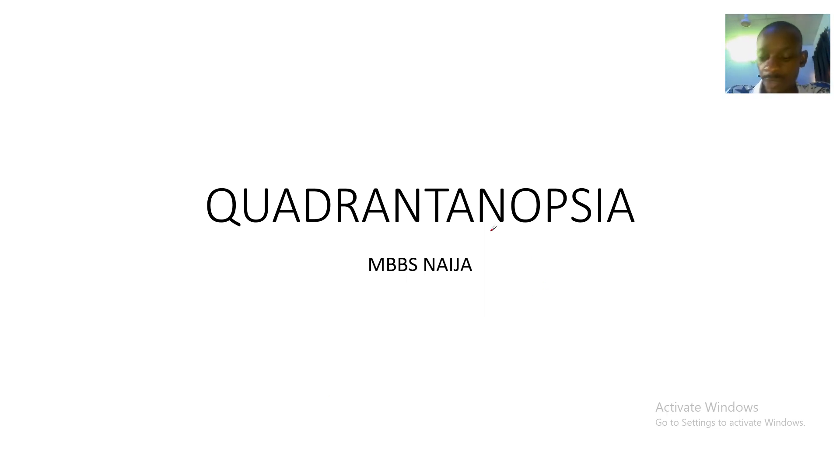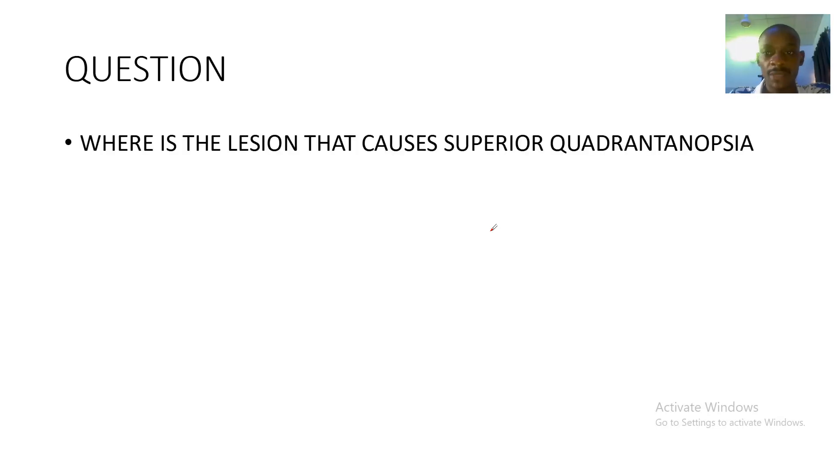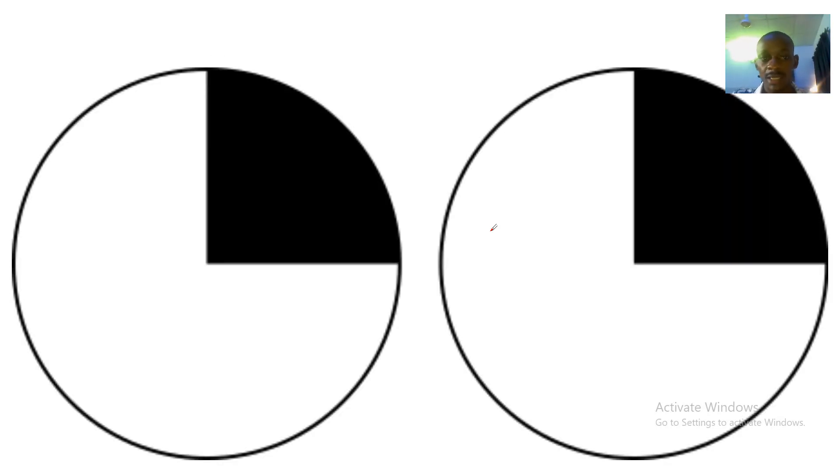Hello guys, today we will be talking about quadrantanopia. So we say, where is the lesion that causes superior quadrantanopia? All right, so this is superior quadrantanopia, and quadrant means one fourth.